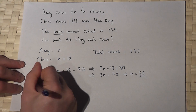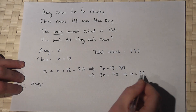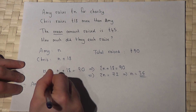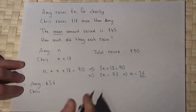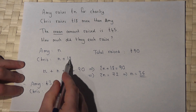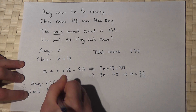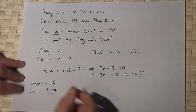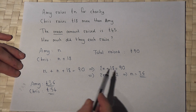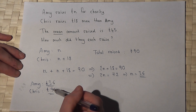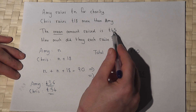So therefore Amy, who raised n pounds, must have raised 36 pounds. But Chris raised 18 pounds more — 36 plus 18 is 54 pounds. So Amy raised 36, Chris raised 54. To check that: 36 plus 54 is 90, divide by 2 for the mean is 45.